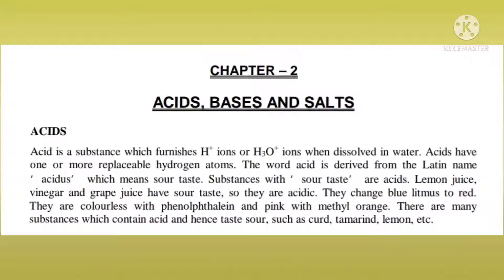Phenolphthalein is an artificial indicator. When used with an acid, phenolphthalein gives a colorless result, and methyl orange turns pink in the presence of an acid. These color changes are important — please underline them and make notes.